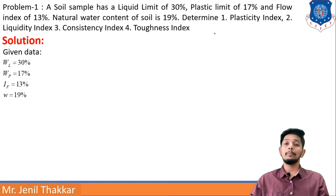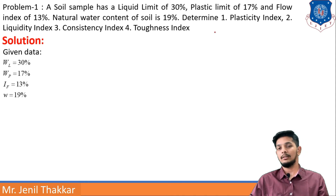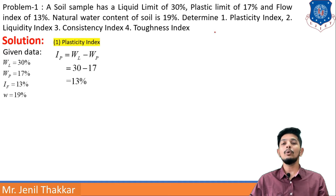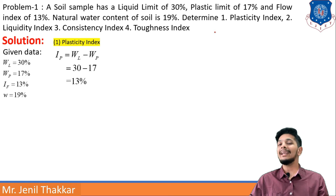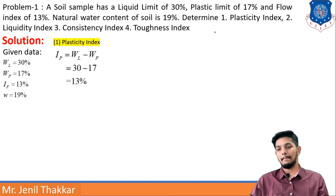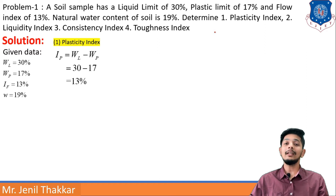Given data: WL = 30%, WP = 17%, IF = 13%, W = 19%. First, finding plasticity index: IP = WL − WP = 30 − 17 = 13%.